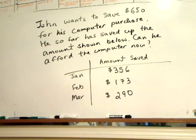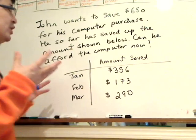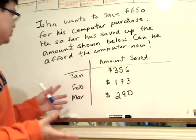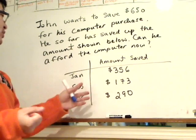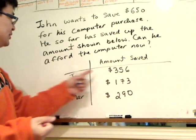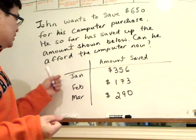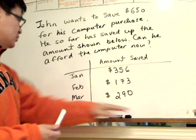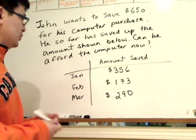Okay, so let's take it up. The question is quite straightforward. Really what you want to do is to add the numbers together — all the savings he made in January, February, and March. So that's what we're going to do.